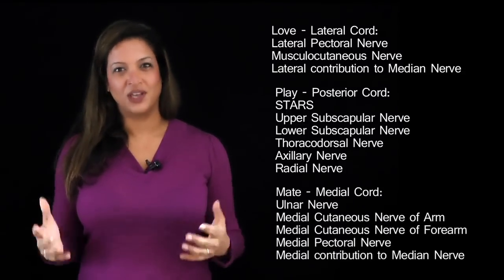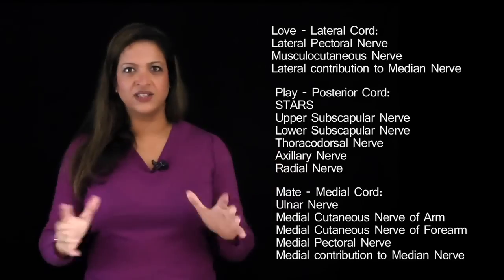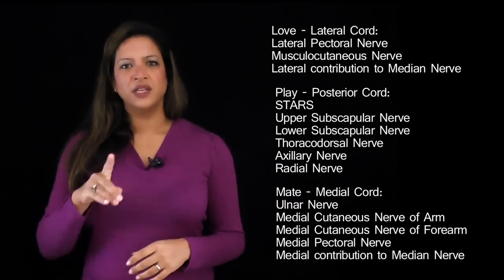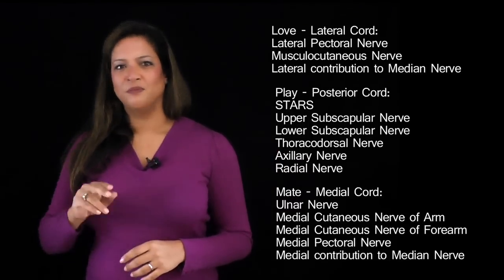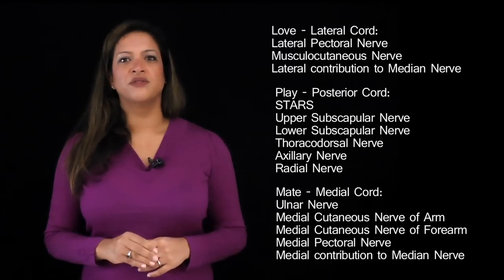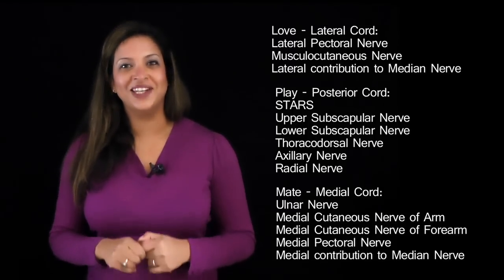The medial cord also has five branches: the ulnar nerve — always think medial and ulnar together — the medial cutaneous nerve of the arm, the medial cutaneous nerve of the forearm, the medial pectoral nerve, and the medial contribution to the median nerve. So once you break it down and look for associations, I dare say it — the brachial plexus is not that bad.